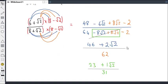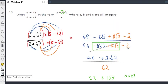So what do we get? We get an a, which is equal to 23. We get a b, which is equal to 1. And we get a c, which is equal to 31. And if we look back up here, that satisfies the format a plus b root 2 over c.